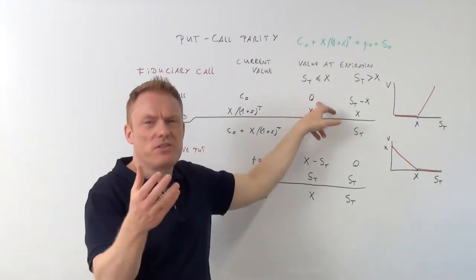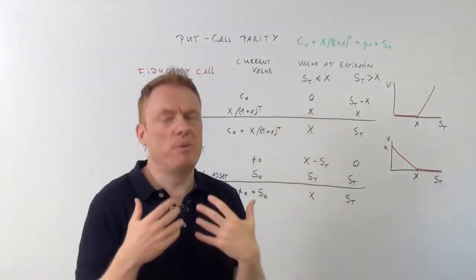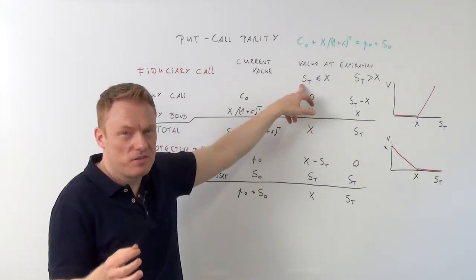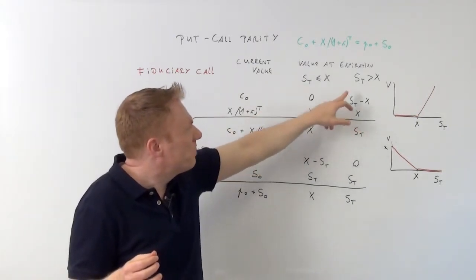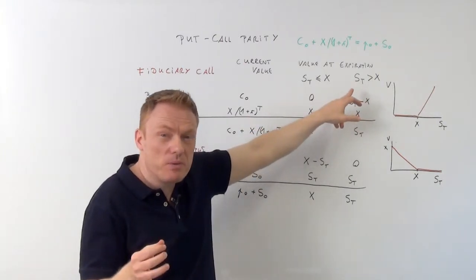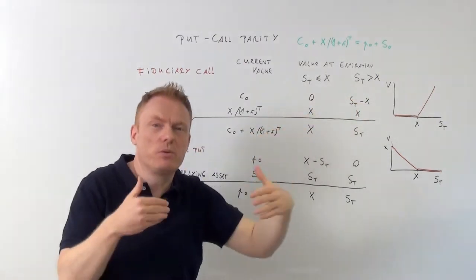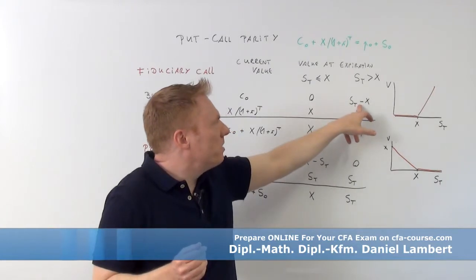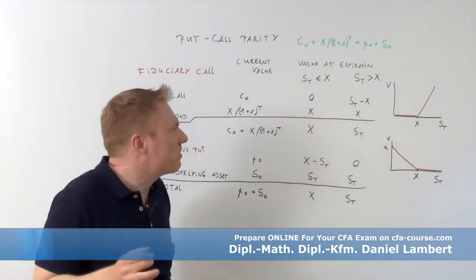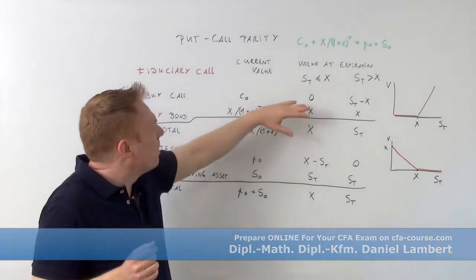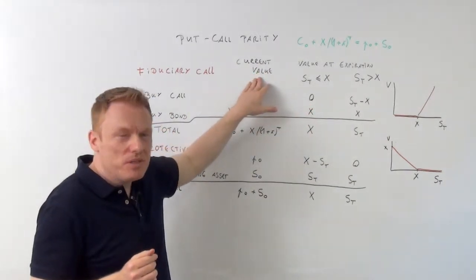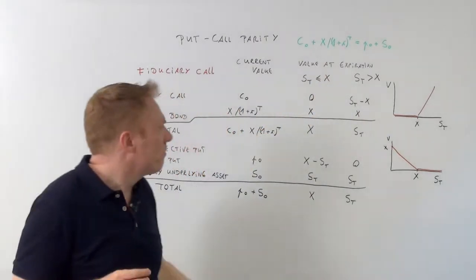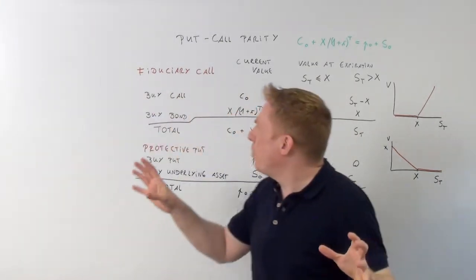We do not exercise this call — this right to buy an underlying — if the stock price is inferior to the exercise price. If it is strictly superior to the exercise price, we will exercise the call because we get a gain equal to S sub-T minus X, minus the exercise price. So this is the value now at period zero and this is the value tomorrow at period capital T.